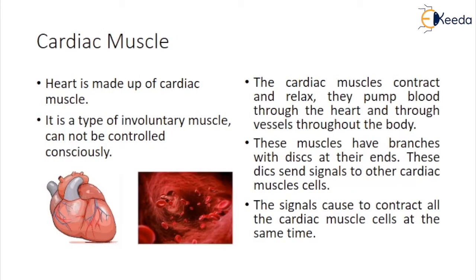Cardiac muscle: the heart is made up of cardiac muscle. It is a type of involuntary muscle and cannot be controlled consciously. The cardiac muscle contracts and relaxes, pumping blood through the heart and through vessels throughout the body. These muscles have branches with discs at their ends. These discs send signals to other cardiac muscle cells, causing all cardiac muscle cells to contract at the same time.